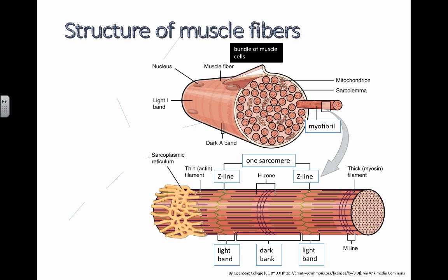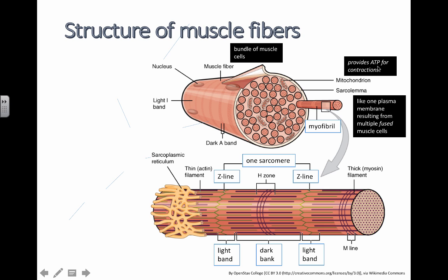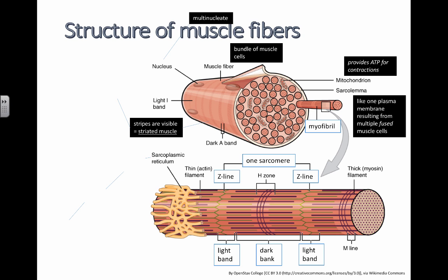A muscle fiber is a bundle of muscle cells. There are mitochondria in here to provide ATP for contractions — you need energy to move your muscles. There's also the sarcolemma, which is like one plasma membrane that results from fusing a bunch of muscle cells together into one continuous membrane. There are many nuclei, which makes this one of the exceptions to cell theory — the individual cells fuse together but their nuclei remain, which is one of the special features of muscle fibers.